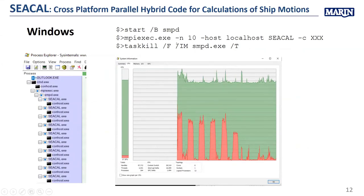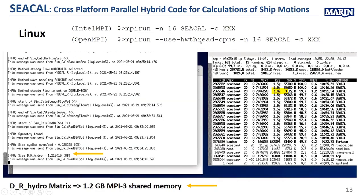Running MPI on Windows looks like the standard mpiexec command line, and you can monitor the parallel execution with Process Explorer. One difference on Windows is you need an extra program to set the configuration for allowing MPI branching. Our users — naval architects and engineers — find even these things already a bit complicated.